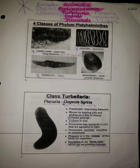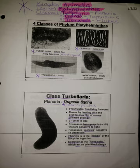There are four classes of the phylum Platyhelminthes: Turbellaria, which includes the small, free-living flatworms where no host is required; Trematoda, which includes the flukes; and Cestoda, which includes the tapeworms.